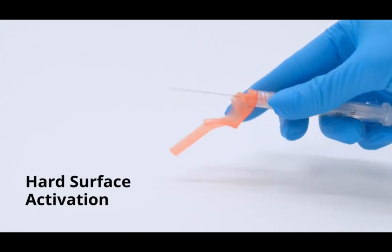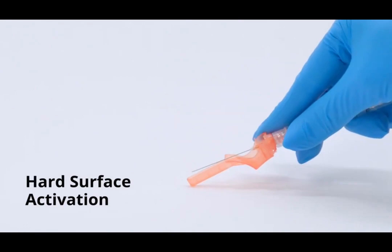Turn the syringe over and position the sheath at the lowest possible angle to the flat surface. Then push down with a firm, quick motion until a distinct audible click is heard.